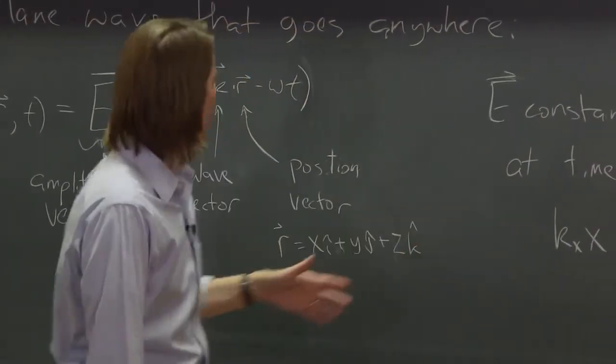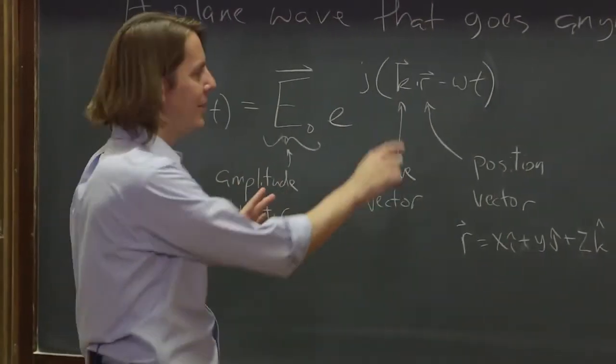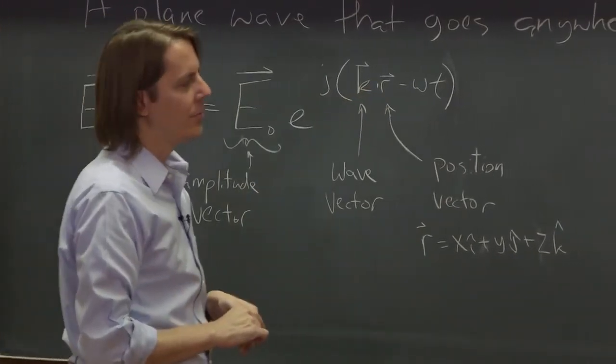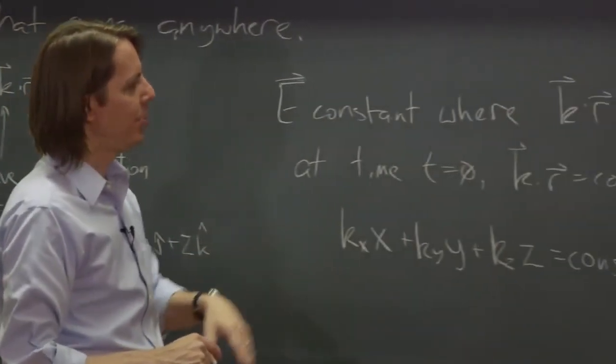Constant times x plus a constant times y plus a constant times z equals a constant. It's how you mathematically describe a plane. So sure enough, just writing it this way, just having k dot r as your spatial part is all it takes to define a plane wave.